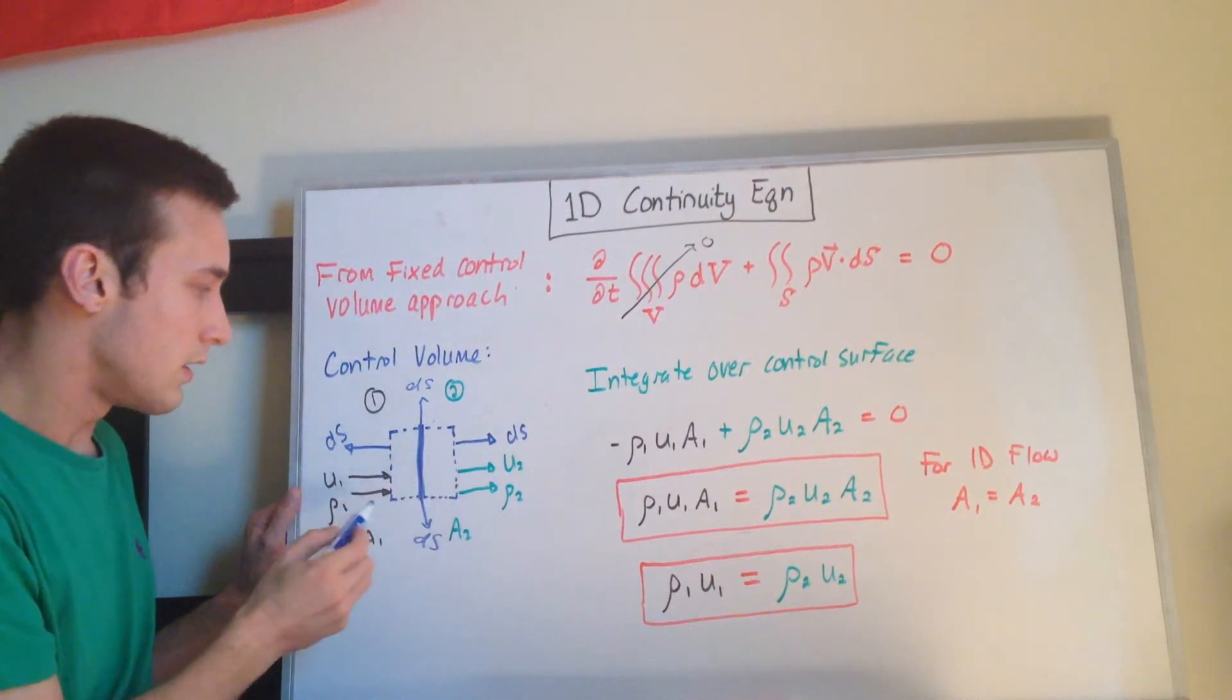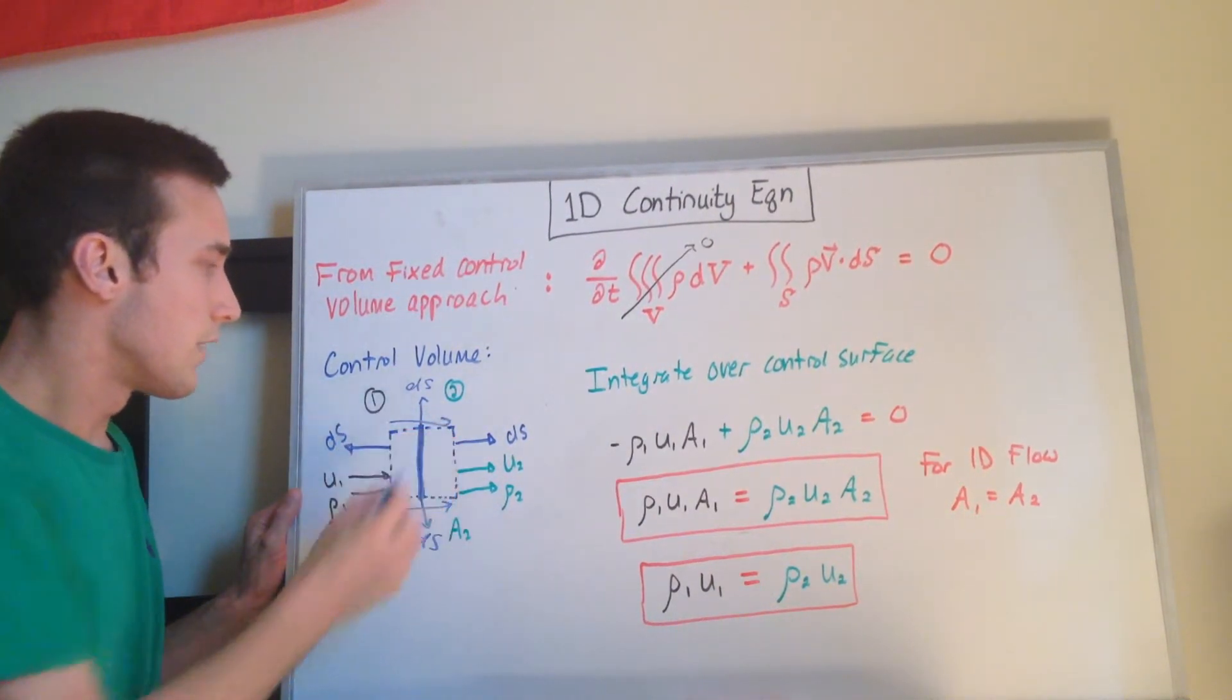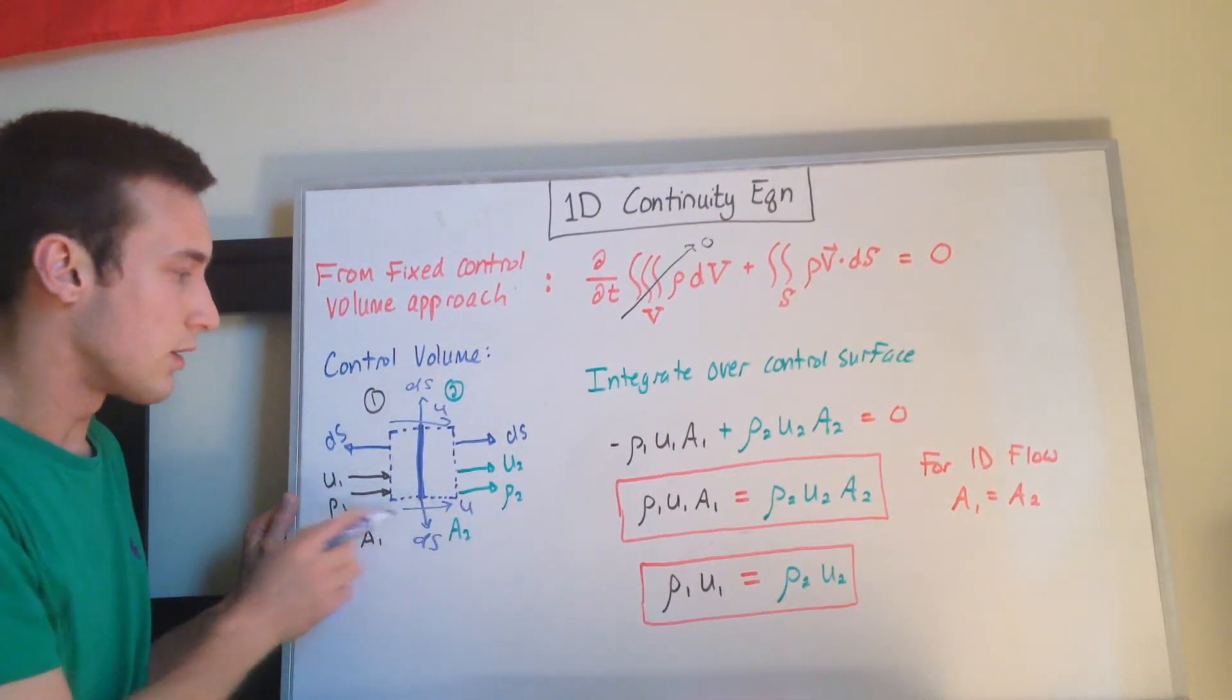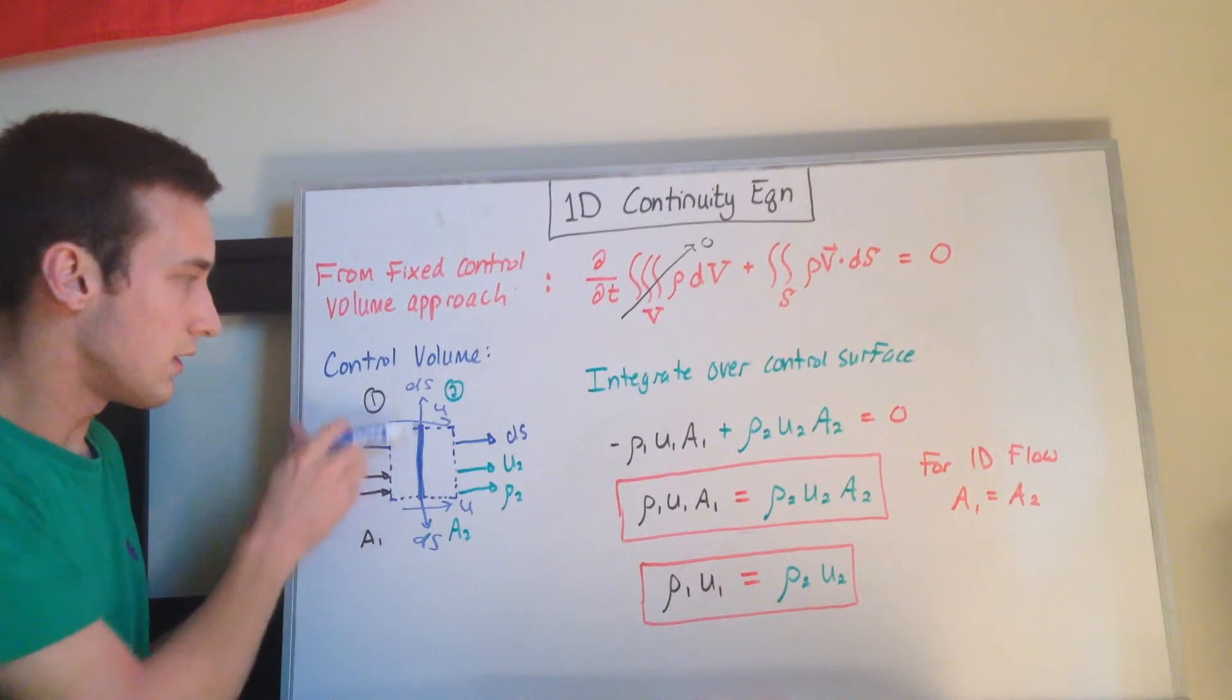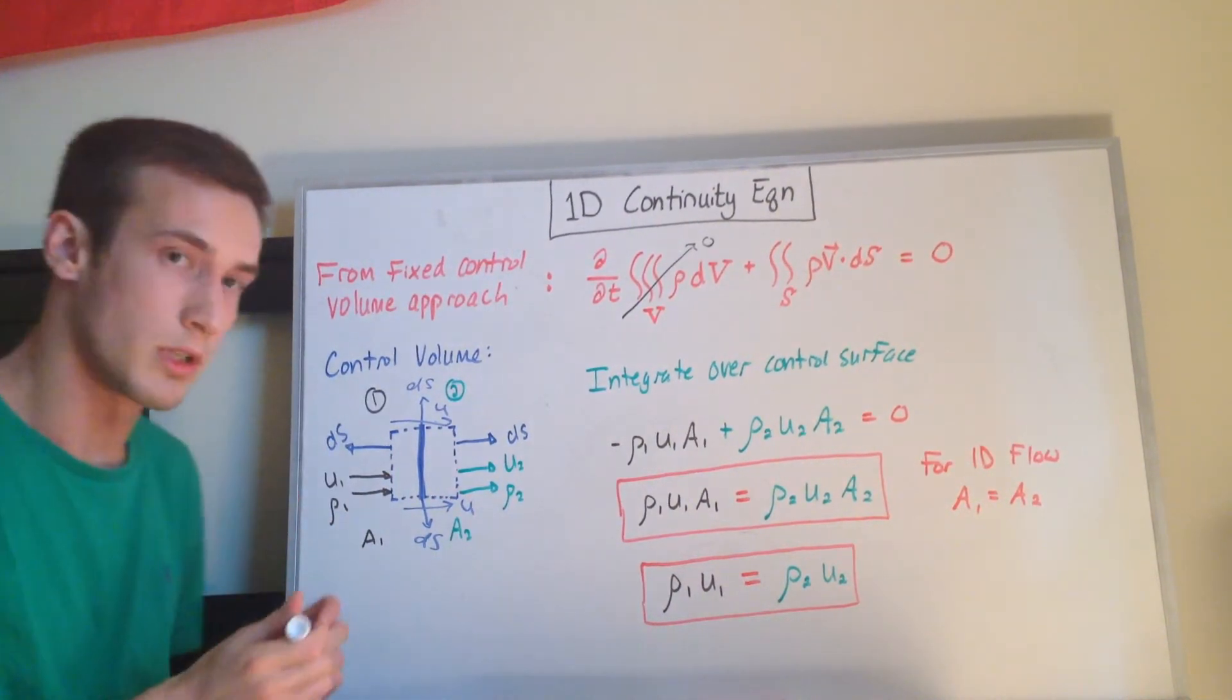And if you look at the velocity vectors, they're going to the right, and if you take the dot product of u·ds on these surfaces, it'll give you zero, because they're perpendicular to each other.